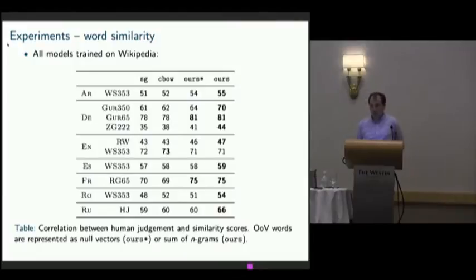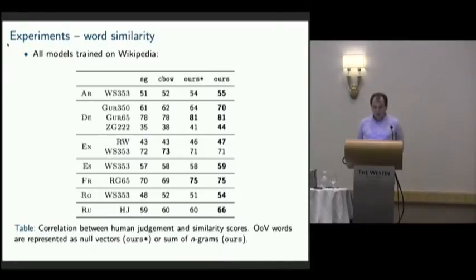We also performed experiments on a word similarity dataset, comparing our approach with skip-gram and CBOW baselines. We consider two variants of our model. The first one uses null vector for out-of-vocabulary words, so we do not exploit subword information at test time. In the second column, we represent out-of-vocabulary words by the sum of their character n-gram vectors. We observe that on the first German dataset, computing word representations for out-of-vocabulary words works quite well and gives significant improvement. For rare words, using subword information helps a lot.